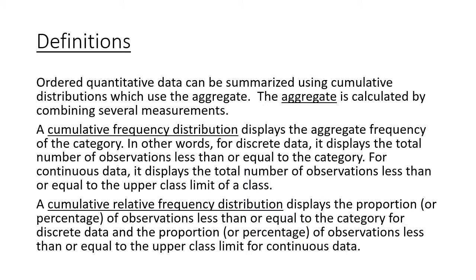A few more definitions before the next part. Ordered quantitative data, data that's numbers and has to be in a specific order, can be summarized using cumulative distributions. These are actually really important in a lot of aspects of doing statistics, where what we're doing with that cumulative data is we're actually looking at the aggregate, which means we're combining several different measurements.